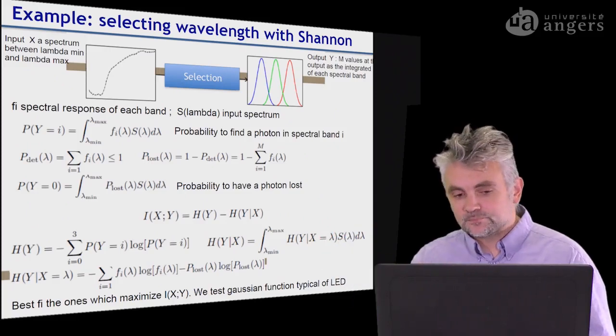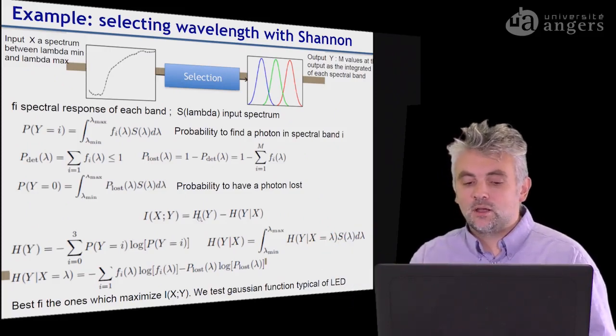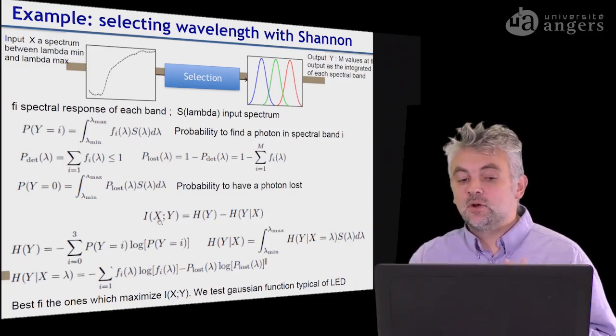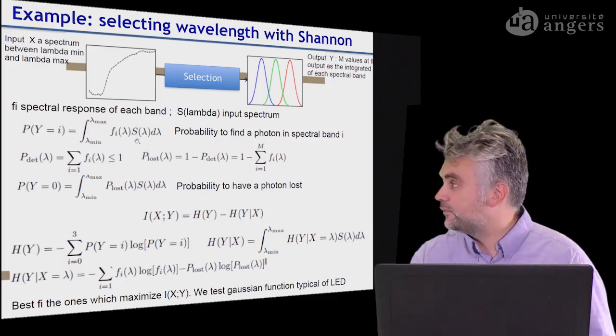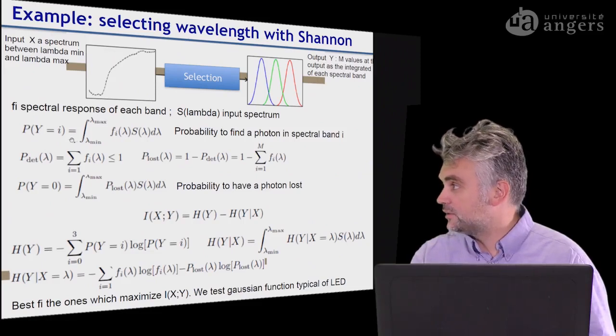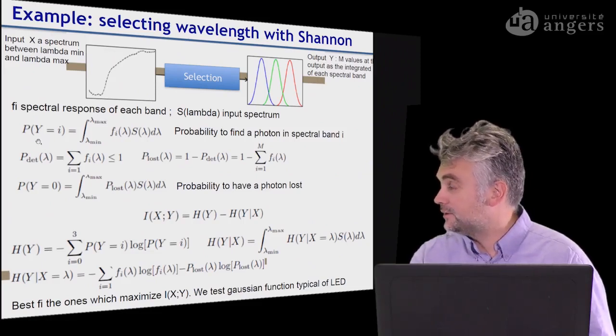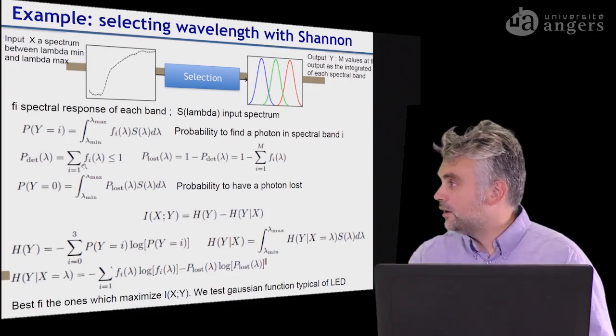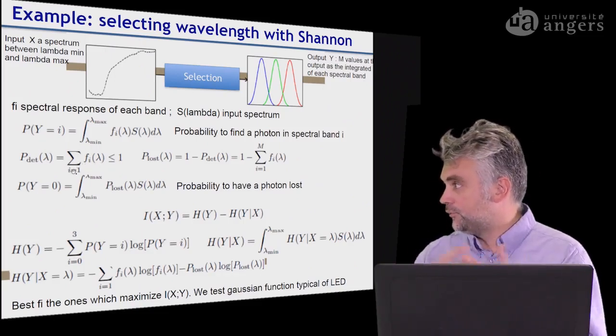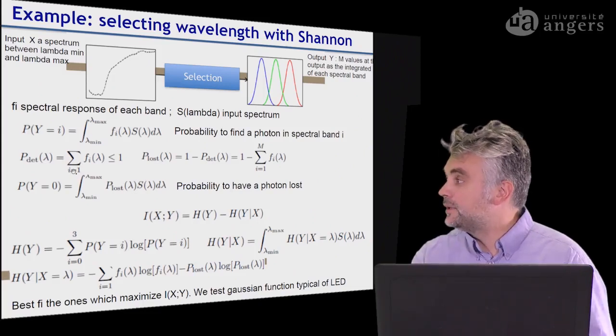So what can be done on this is to model how the selectivity of this spectrum filter will impact the output Y and to model how the photons may be lost in the machine.